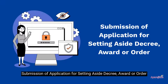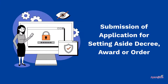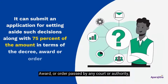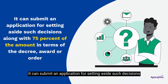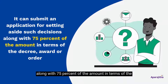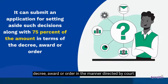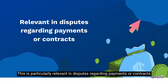Fourth, Submission of Application for Setting Aside Decree, Award, or Order. An appellant not being an MSME supplier who is aggrieved by a decree, award, or order passed by any court or authority can submit an application for setting aside such decisions, along with 75% of the amount in terms of the decree, award, or order, in the manner directed by the court. This is particularly relevant in disputes regarding payments or contracts.